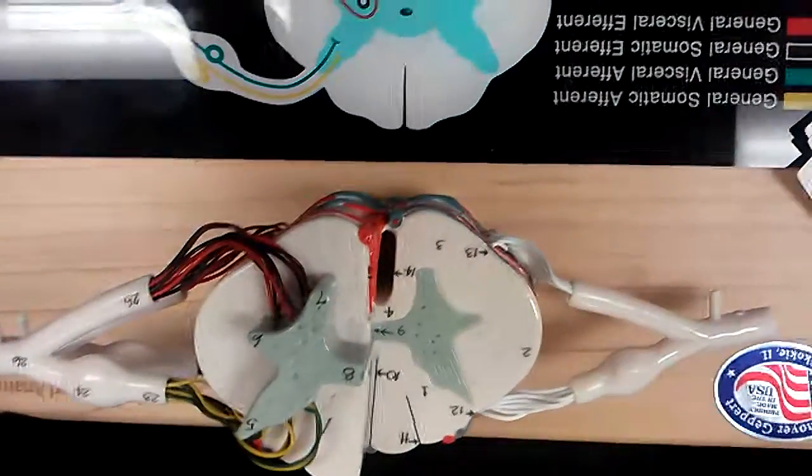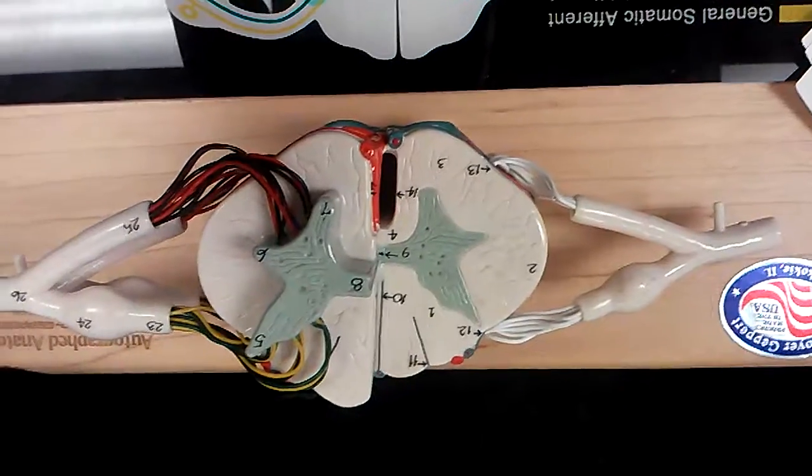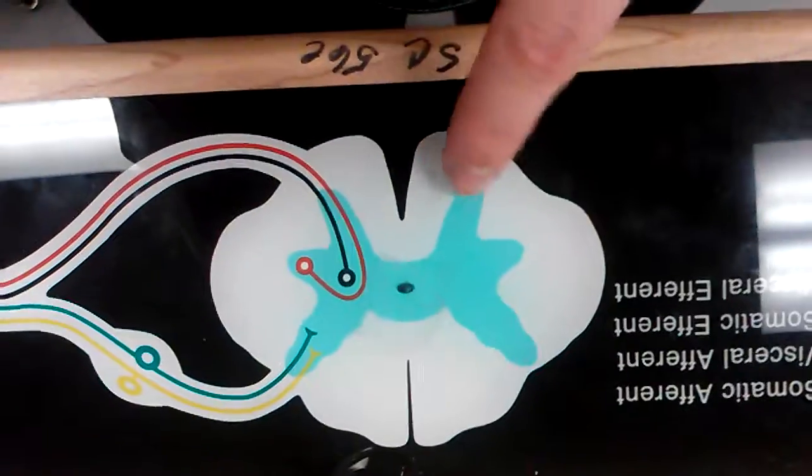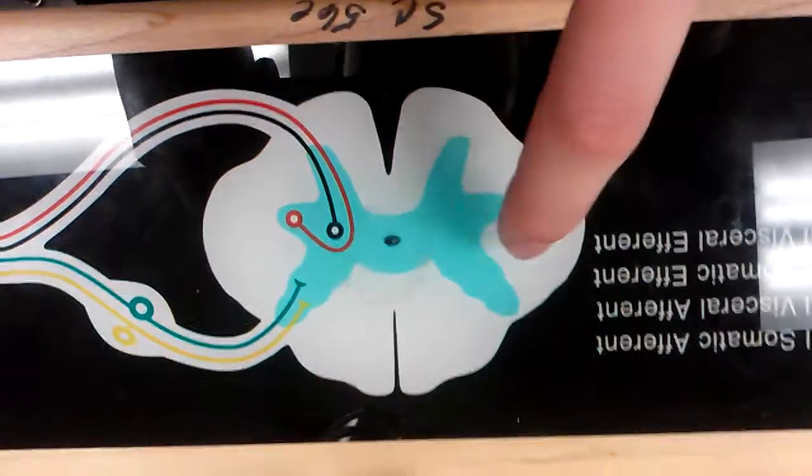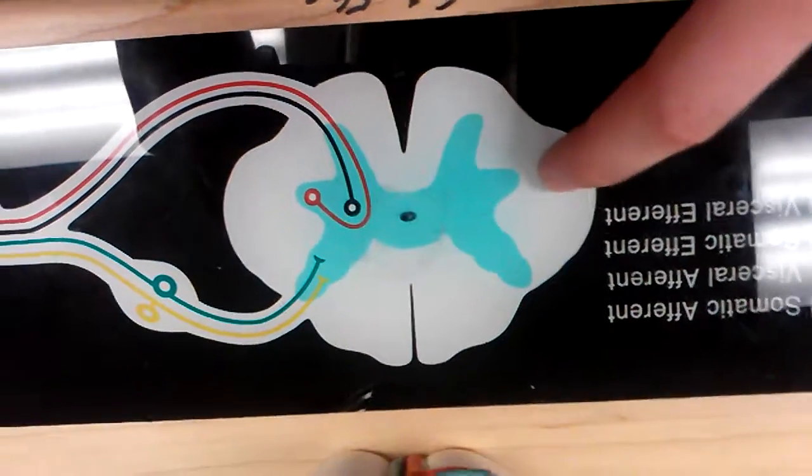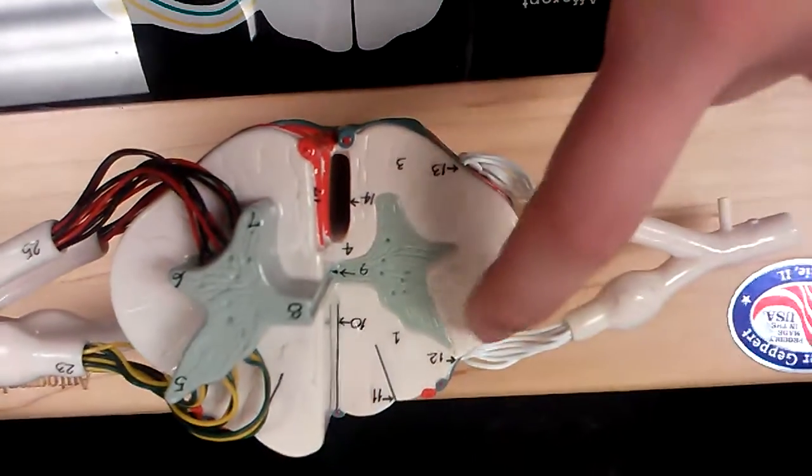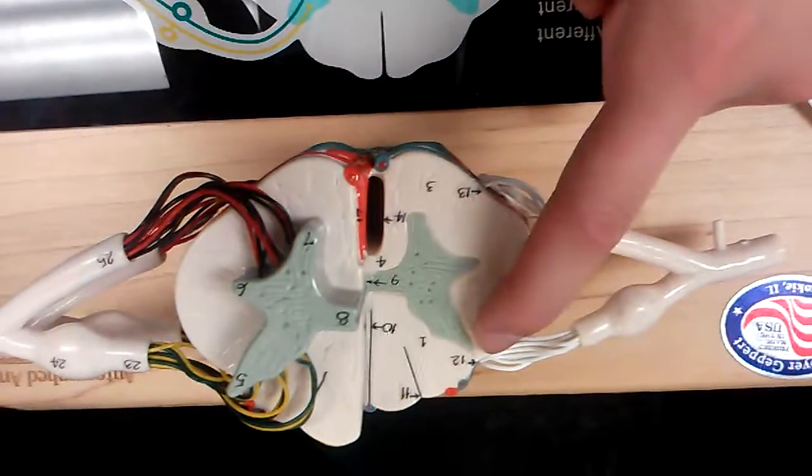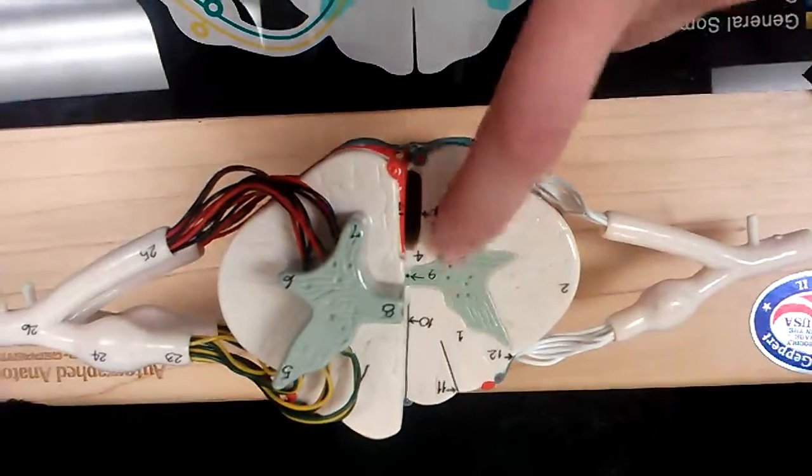Next one is the anterior, lateral, and posterior horns of the gray matter. So anterior would be this one, lateral horn would be this one, because it's in the middle, and the posterior horn would be this one. So back to this model, the anterior, lateral, and posterior horn of the gray matter, because it's gray.